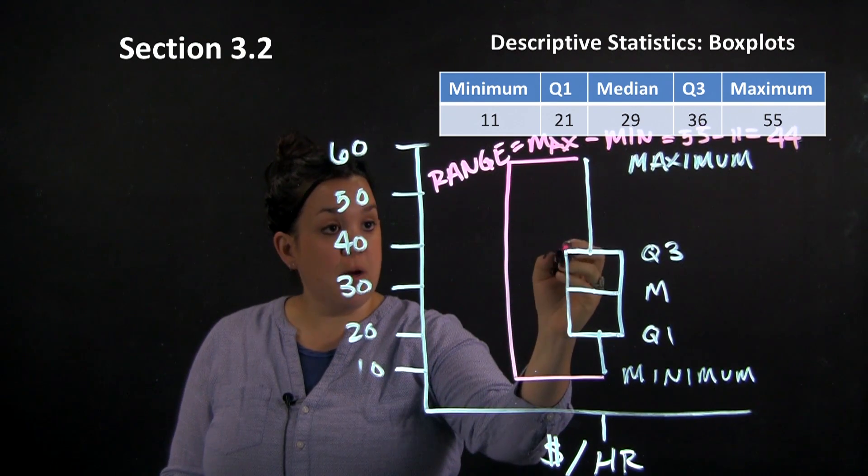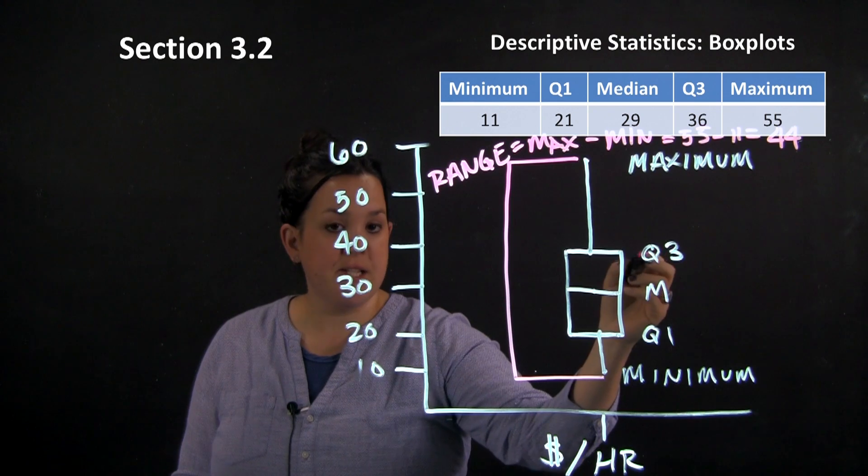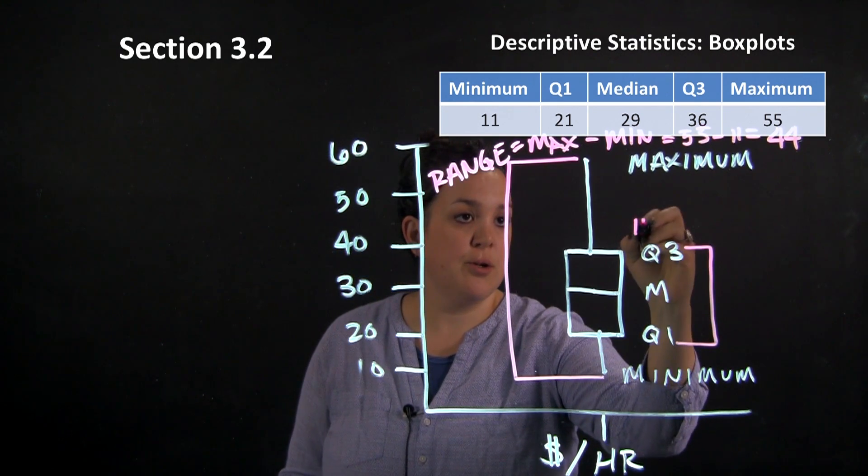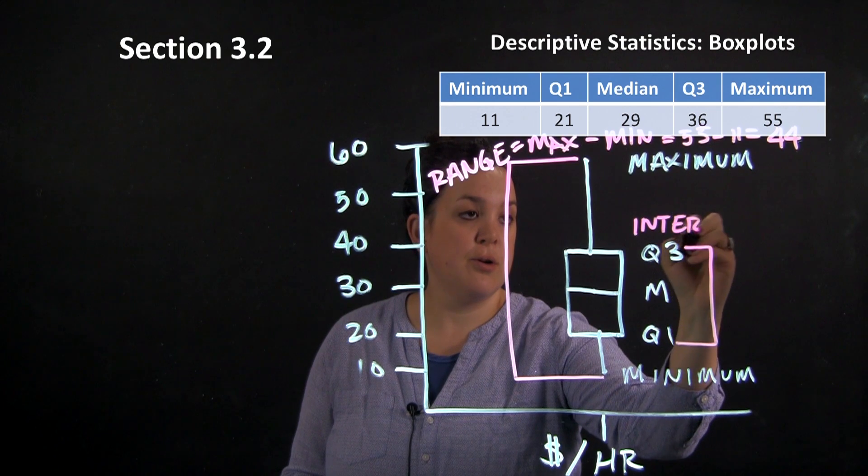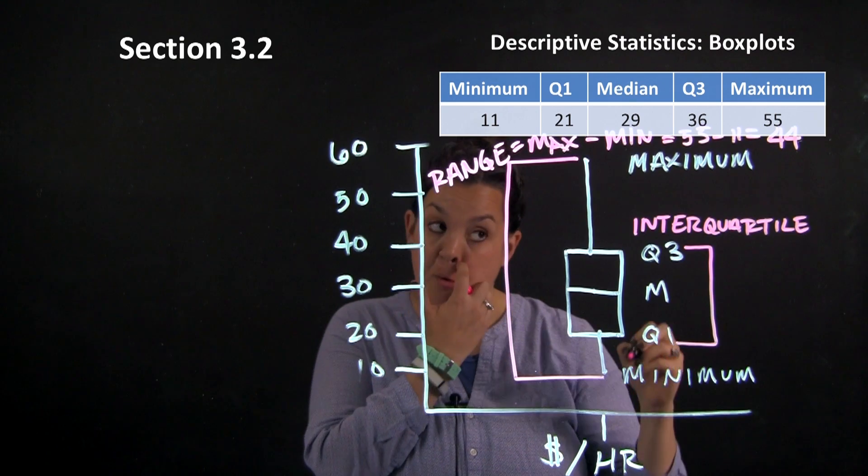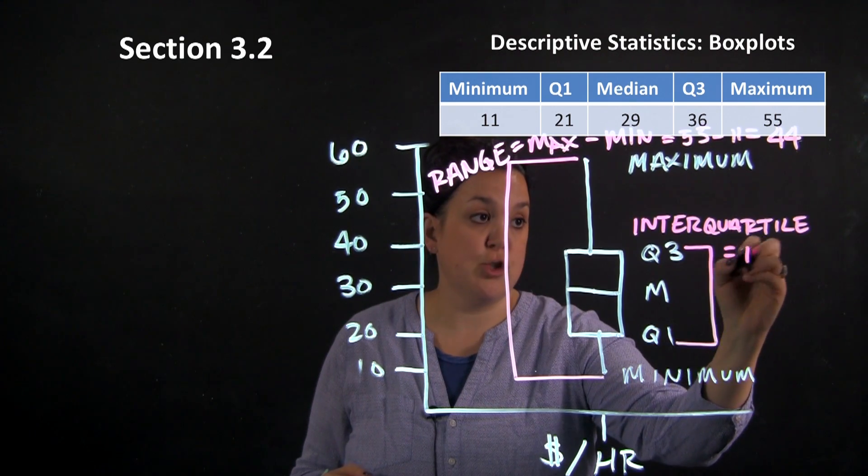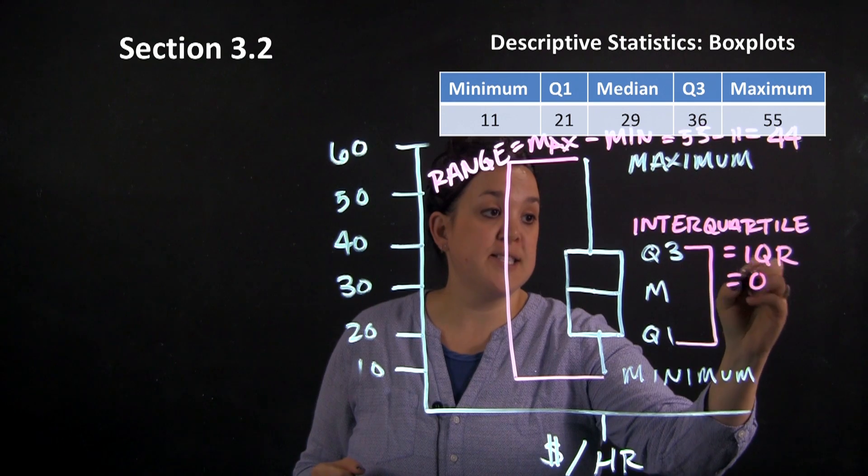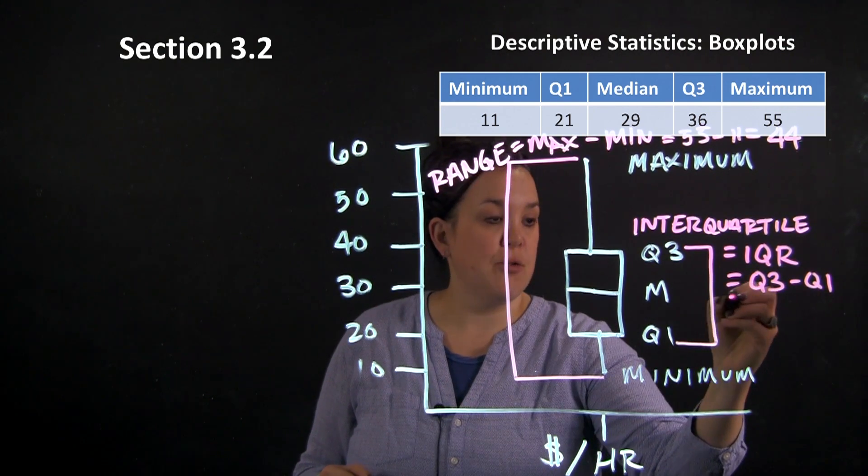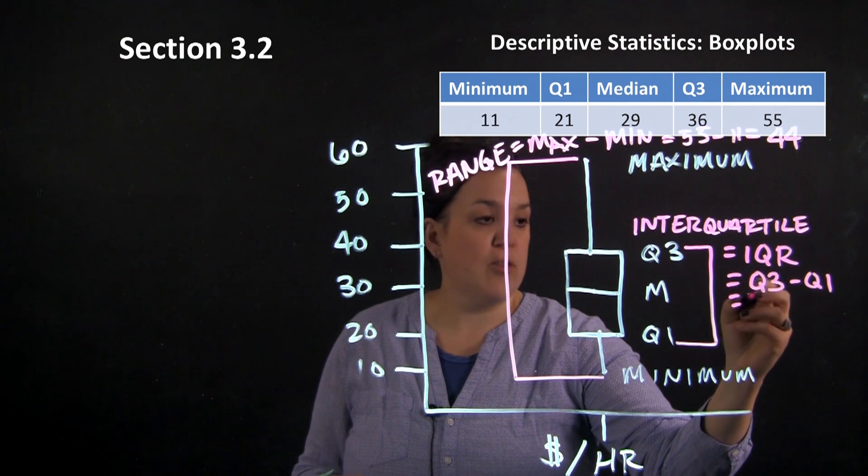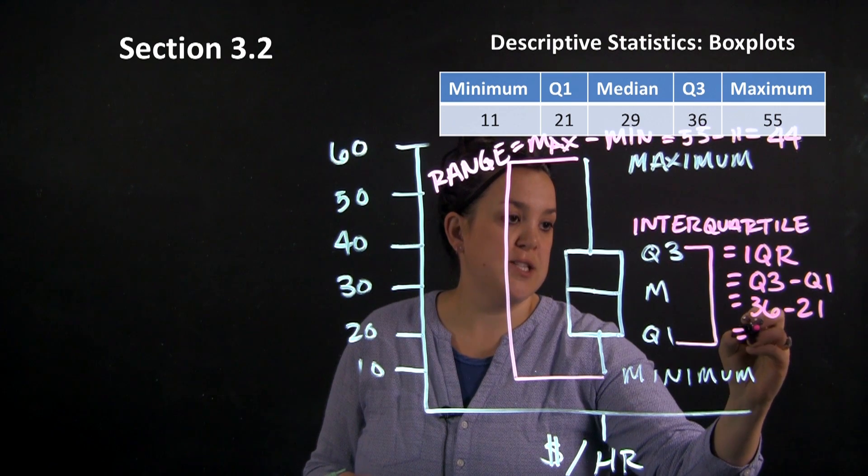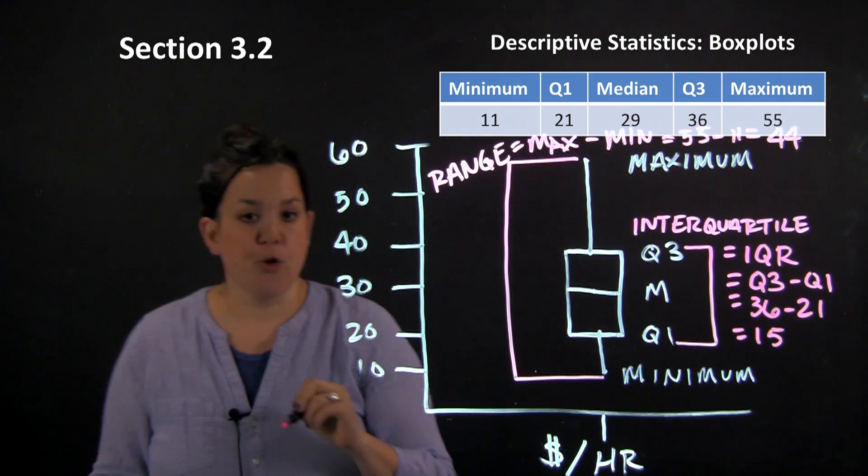Another measurement that we can use to describe variability is something called the interquartile range. Now that is quite a mouthful. So a lot of times that's just shortened to IQR. And that is the distance between Q3 and Q1. So for our data set that's going to be 36 minus 21 which gives us 15 as an interquartile range.